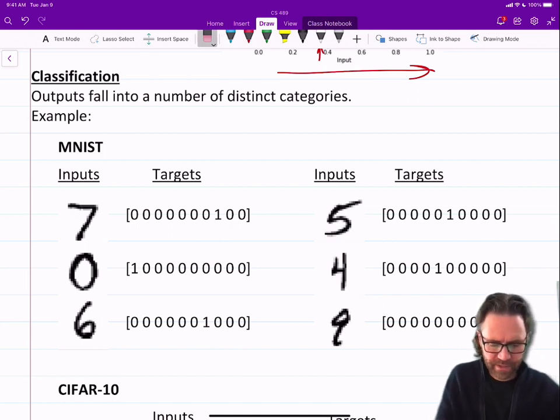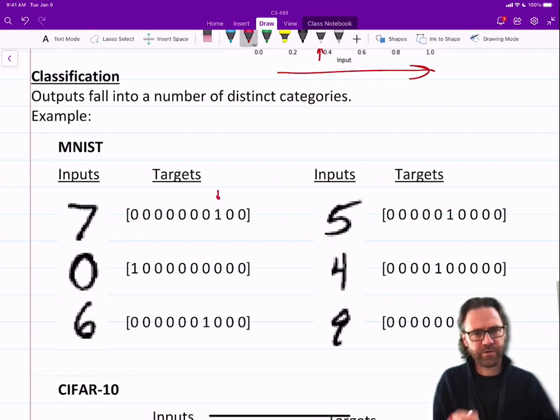I'll be more—no, I've talked about one-hot, have I? No, I don't think I have. Yes, I have. So the input is a seven, and the output is a one-hot vector with a one in the seven position and zeros everywhere else.